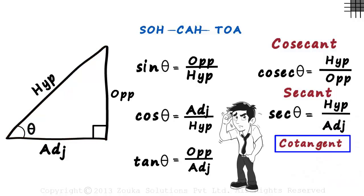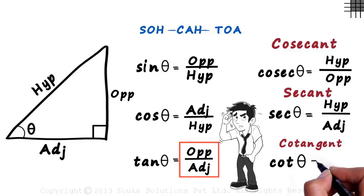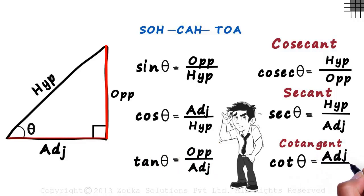The cotangent function is written as cot theta. And yes, the cotangent function is also the reciprocal of the tangent function. So it equals the reciprocal of opposite by adjacent, which is adjacent by opposite.